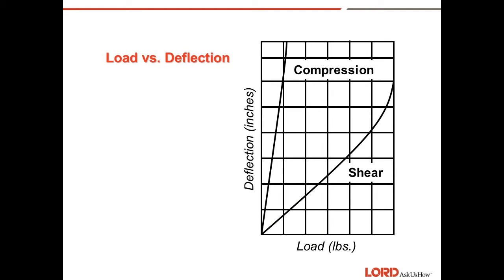Load versus deflection: This is a typical load versus deflection curve. The x-axis is the load in pounds and the y-axis is the deflection in inches. The stiffness or spring rate of a mount is a function of its modulus, geometry, and load direction. As the curve illustrates, the compression stiffness is much higher than the shear stiffness. This relationship is typical of a sandwich mount — the shear stiffness is much softer than the compression spring rate.